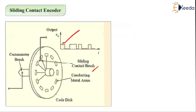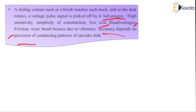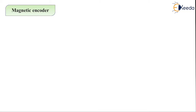So, what have we seen in the sliding contact encoder? Remember that the conducting areas are connected to the common slip ring on the encoder shaft. The conducting metal areas use the brush mechanism, and due to that brush mechanism, when the brush touches the tracks and the disk rotates, a voltage pulse is generated. We have seen the advantages and disadvantages for these sliding contact encoders.